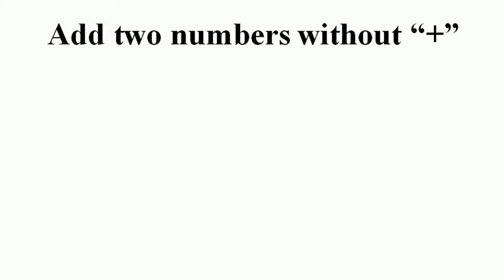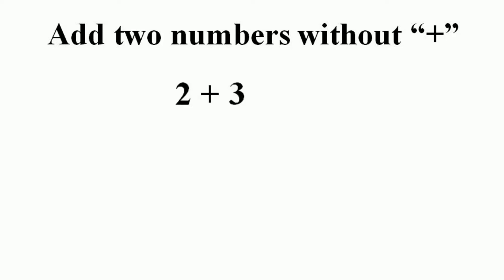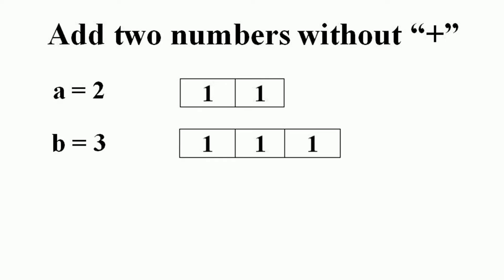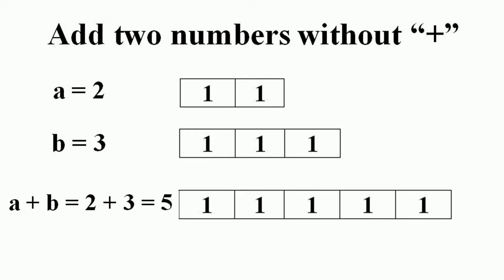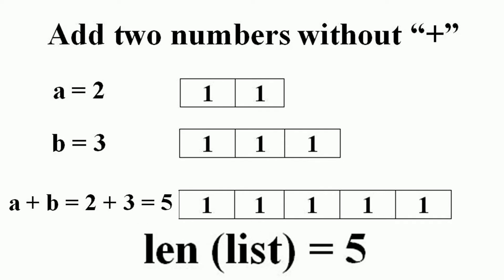Our goal is to find the addition of two numbers without the use of the plus operator. We will take a list and append ones into it — the number of ones depends on the values to add. For two plus three, the first list will have two ones and the second list will have three ones. The final list will have five ones, and we take the length of the list as our answer.